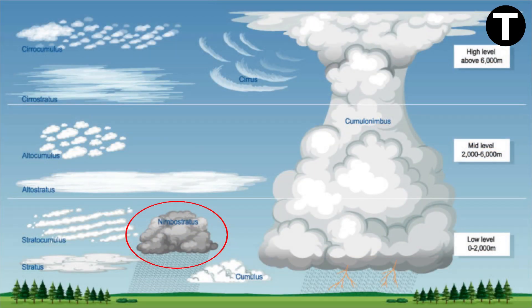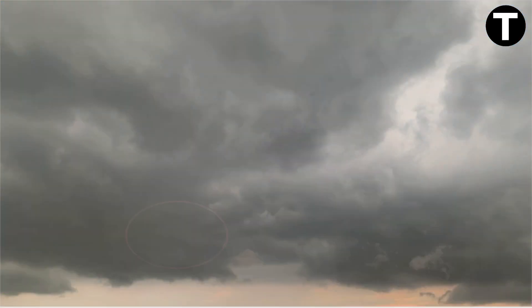Last but not least, nimbostratus clouds bring vertical extension and gray layers. They're known for their moderate precipitation coverage.